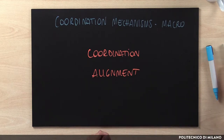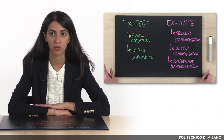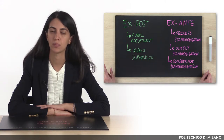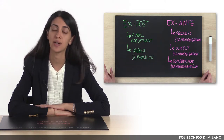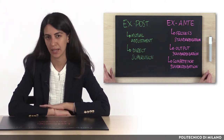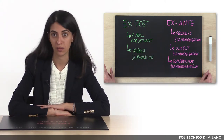To achieve this coordination and alignment we can implement several coordination mechanisms, starting from the coordination mechanisms at the micro level, which are mutual adjustment, direct supervision, process standardization, output standardization and competency standardization. We talk about these mechanisms in detail in another lecture. These coordination mechanisms at the micro level can in fact be put in place not only inside the organizational unit, but also between organizational units.